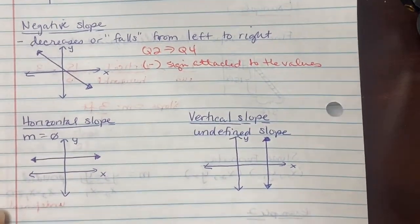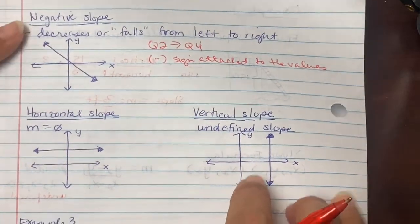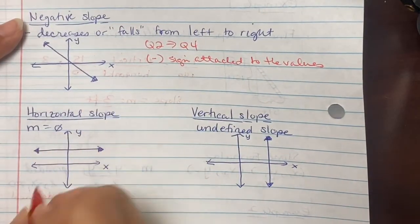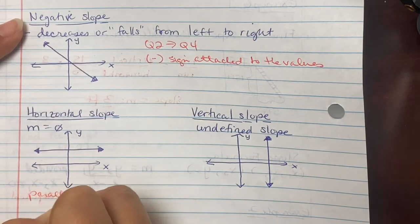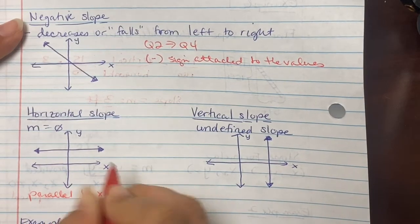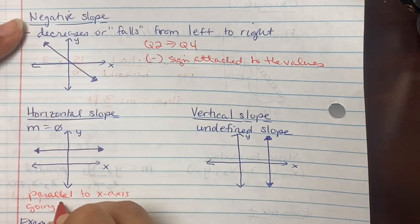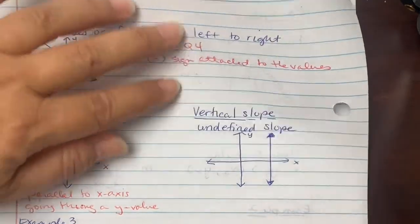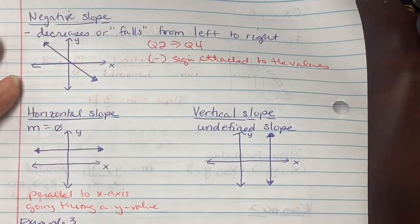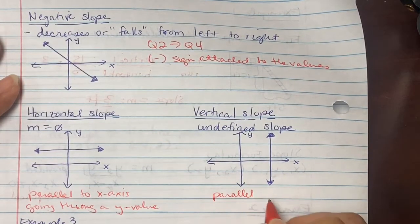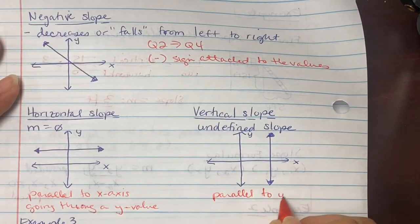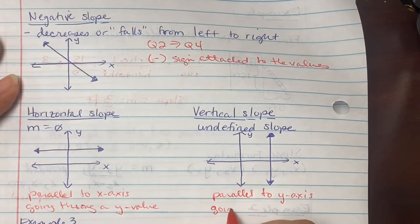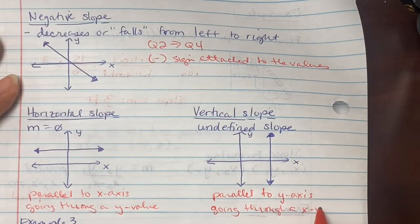A horizontal slope is known as slope equal to zero — it runs parallel to the x-axis, passing through a y value. A vertical slope is known as an undefined slope — it goes parallel to the y-axis, passing through an x value.